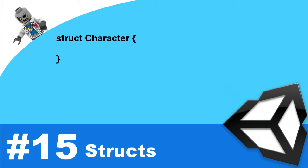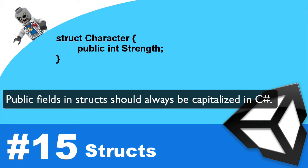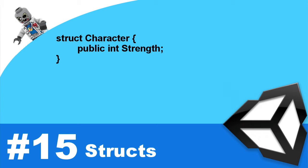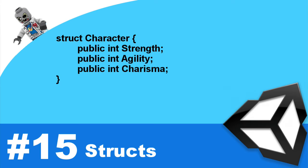For our character, we want to have three different fields: one for its strength, one for its agility, and another for its charisma. You do this the same way we've been doing it all along — go inside the first brace and define your variable. So you would put public int Strength. We'll cover access modifiers in the next video; for now, keep things as public, and in another video I'll tell you why that's actually a bad idea. So we're going to do public int Strength, then public int Agility, and public int Charisma. We're going to keep this character really simple — that's all it's going to have. At this point, we have our character already defined.